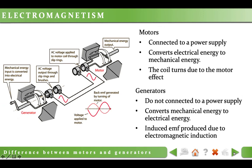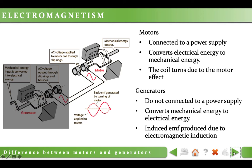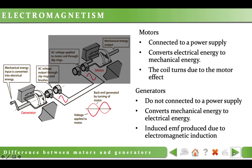Let's summarize the difference between generators and electric motors. Generators are not connected to any power supply — they convert mechanical energy to electrical energy, with induced EMF produced due to electromagnetic induction. As shown in the figure, the structure on the left is a generator: we rotate a handle using mechanical energy, and at the other end we get electric current. Motors need to be connected to a power supply — in this figure, the power supply of this motor is the electricity produced by the generator. The electricity supplied to the motor rotates the coil inside the magnets, converting electrical energy to mechanical energy, with the coil turning due to the motor effect.